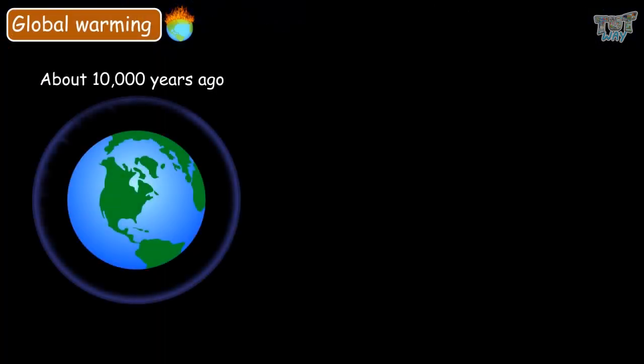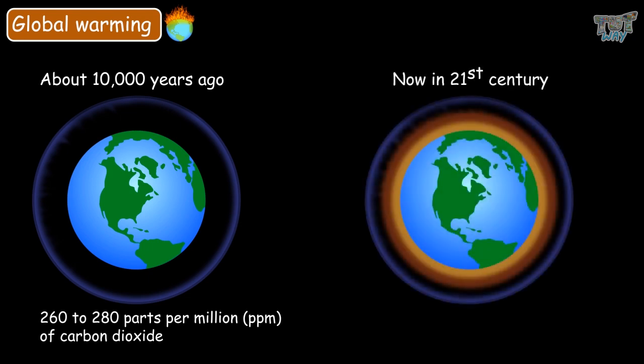About 10,000 years ago, there was 260 to 280 parts per million of carbon dioxide in the atmosphere. And now, in the 21st century, there is about 389 parts per million.